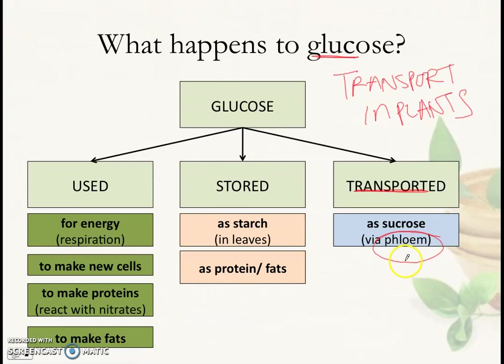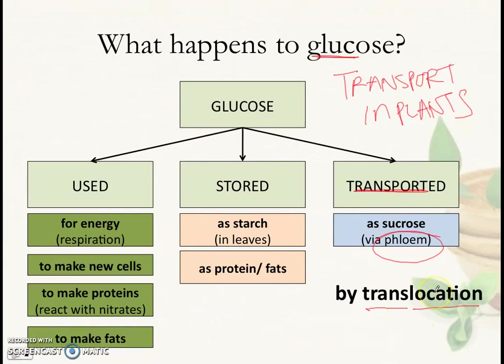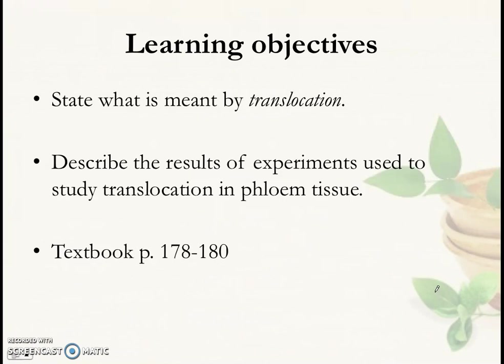Transport in the phloem has a specific name: translocation. Food substances are transported in the phloem by a process called translocation. In this short video we're going to be looking at what translocation means and also some experiments which people have used to study translocation in phloem.